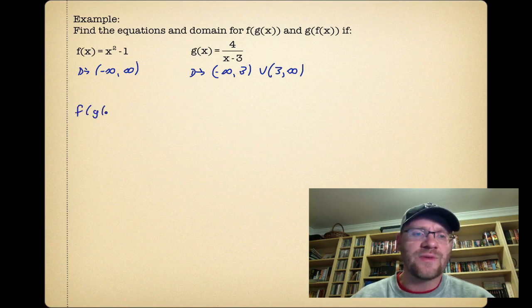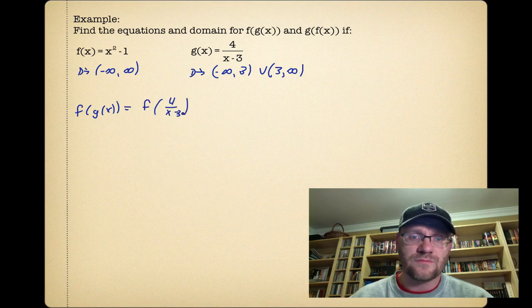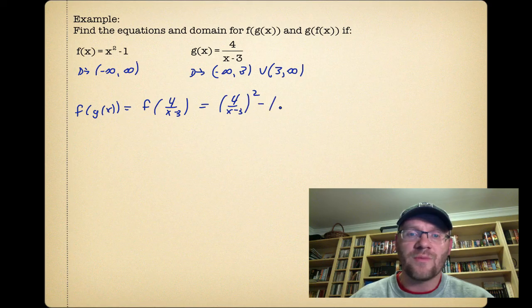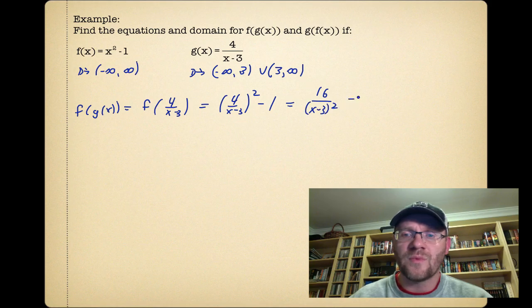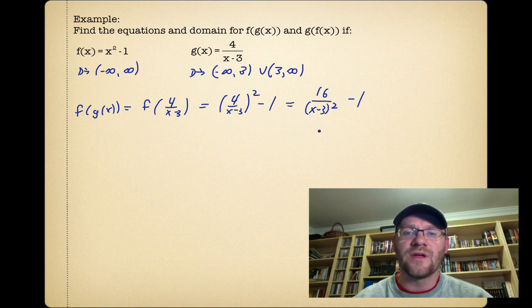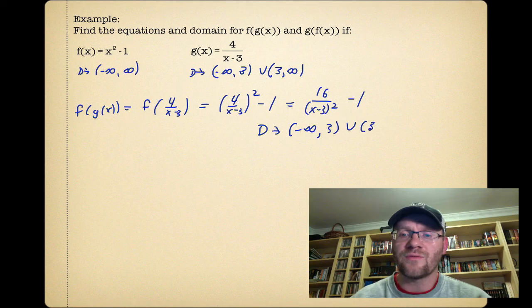f of g of x means we take g(x) and plug it into f(x). Every time we see an x in f(x), we put in 4/(x - 3) instead. So we get 4/(x - 3) squared minus 1, which simplifies to 16/(x - 3)² - 1. When finding the domain, this rational function can't exist at x = 3, and neither could the original g(x). So the domain is the same as before: negative infinity to 3, and 3 to infinity.